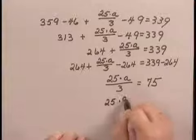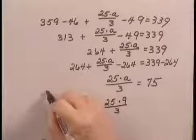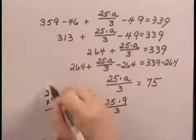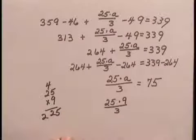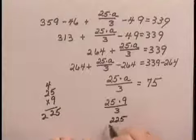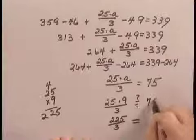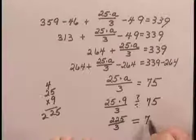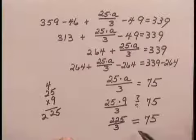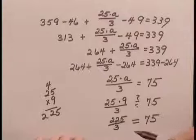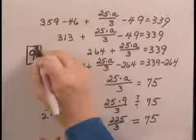25 times 9 divided by 3. Does that equal 75? Well, if I multiply 25 times 9, I get 225. 225 divided by 3 does equal—if I divide those out, that does equal 75. So by substituting in 9 for A, I made a true statement. So I can say that the value of A that makes that statement true is 9.